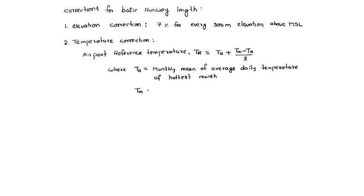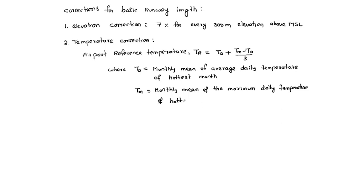TM is the monthly mean of the maximum daily temperature of the hottest month. So, with TA and TM, we can find TR, the airport reference temperature: TR = TA + (TM - TA) / 3.